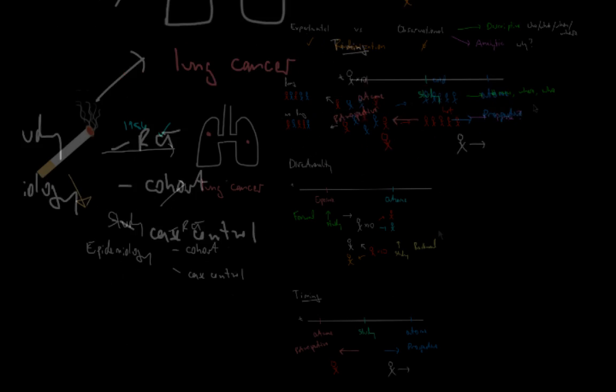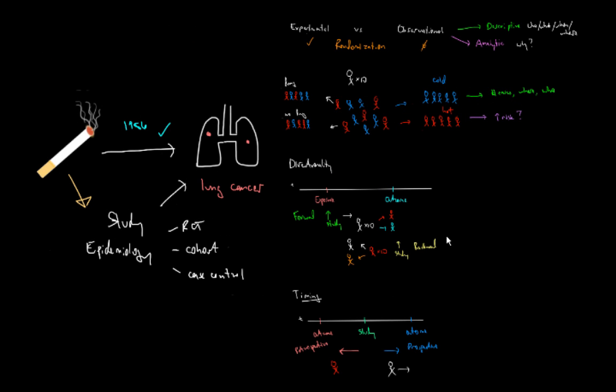Now that we've looked at these three ways to assess epidemiological studies, we're much better equipped to assess any study we may come across. These terms can be combined in different ways — for example, an experimental, forward-directionality, prospective study, or a descriptive, backwards-directionality, retrospective study. In the next video, we're going to look at some specific types of studies that we may come across.